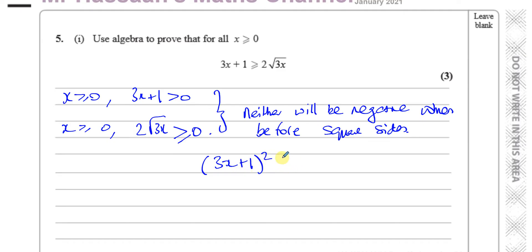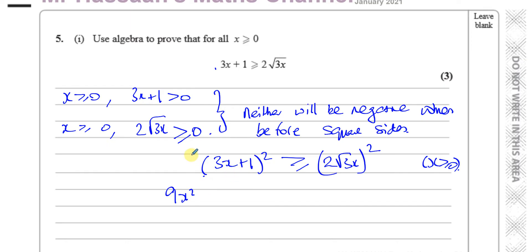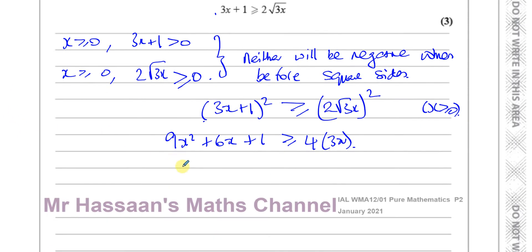I can safely say (3x + 1)² ≥ (2√(3x))². Why? Because x ≥ 0, so each side is zero or positive — none will be negative. Expanding the left bracket gives 9x² + 6x + 1. The right side: 2² is 4 and (√(3x))² is 3x, so I get 4 × 3x = 12x. So: 9x² + 6x + 1 ≥ 12x.